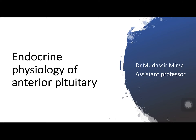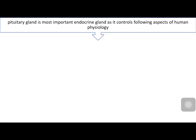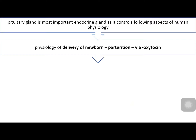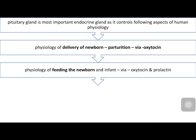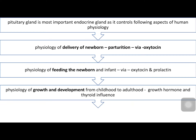Greetings everyone. This tutorial is about endocrine physiology of anterior pituitary, and I am your teacher Dr. Mudassar. The anterior pituitary or pituitary gland is the most important endocrine gland that controls almost all aspects of human physiology, right from birth — helping in delivery of the newborn via secretion of oxytocin, and also in feeding the newborn via secretion of oxytocin and prolactin, which plays an important role in production of milk. It also produces growth hormone, which plays an important role in growth and development from childhood to adulthood.